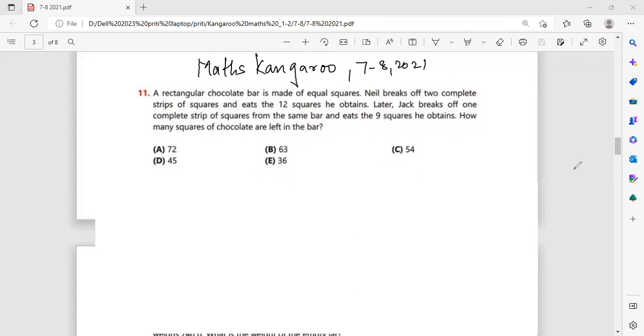A rectangular chocolate bar is made of equal squares. Neil breaks off two complete strips of squares and eats the 12 squares he obtains. Later, Jack breaks off one complete strip of squares from the same bar and eats the 9 squares he obtains. How many squares of chocolates are left in the bar? Now, if we read it, it's saying that he broke off two complete strips of squares and eats the 12 squares he obtains.